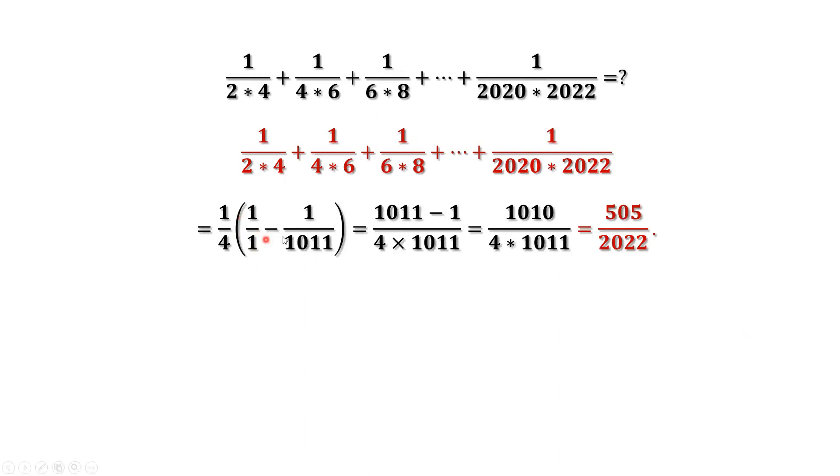First term, and the last term, simplify. We have this result. 505 over 2022 is the answer of this summation.